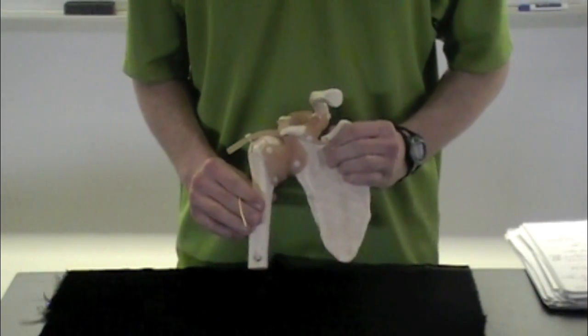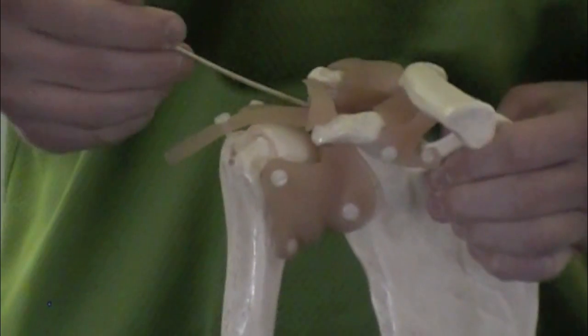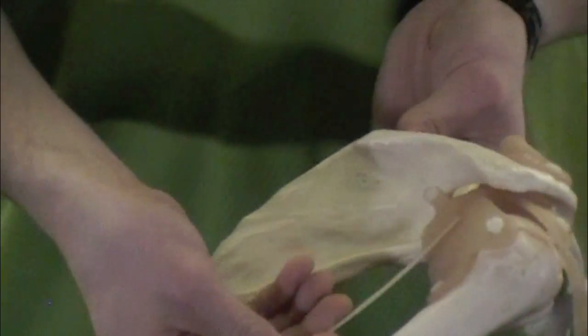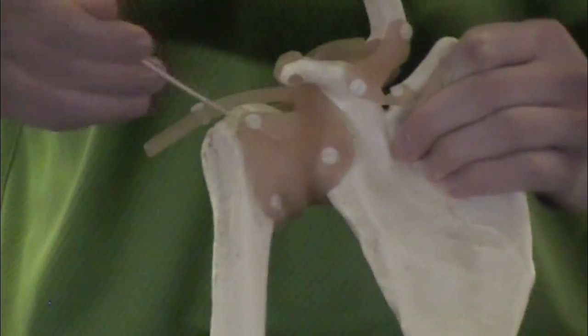You only need to know two ligaments here for this class. Just the glenohumeral ligament. It's going to be all of these ligaments connecting the scapula to the humerus. If you're going more advanced, they'd have different names. But for you, all you need to know is that all of these are glenohumeral ligaments.